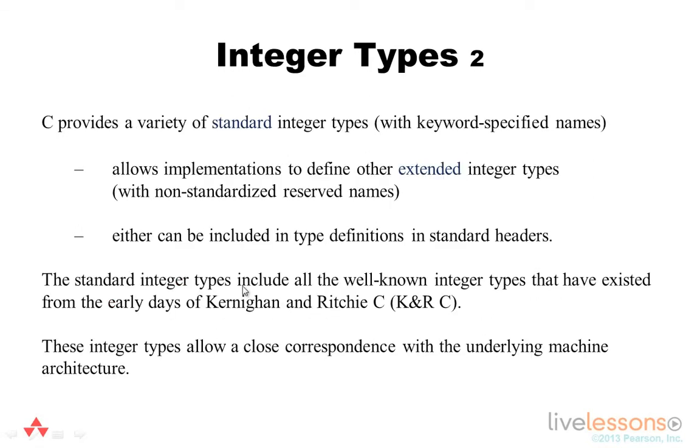C also provides a variety of standard integer types using keyword-specified names and allows implementations to define other extended integer types using non-standardized but reserved names. Either of these can be included in type definitions in the standard headers.